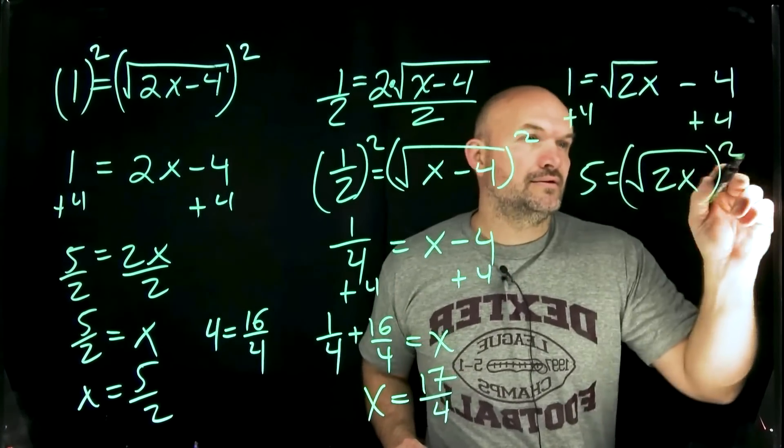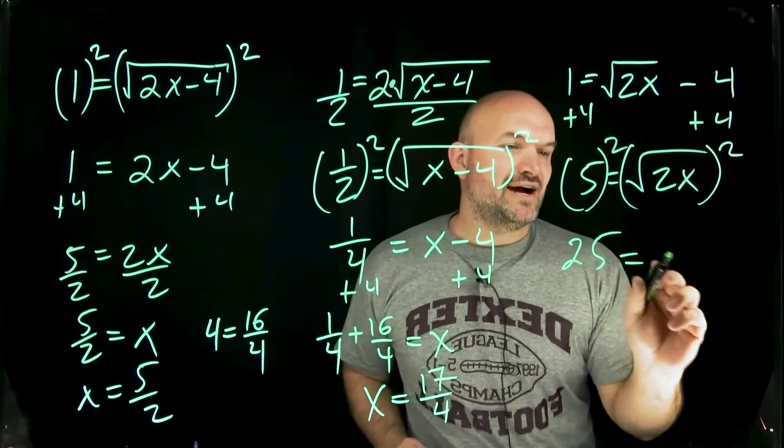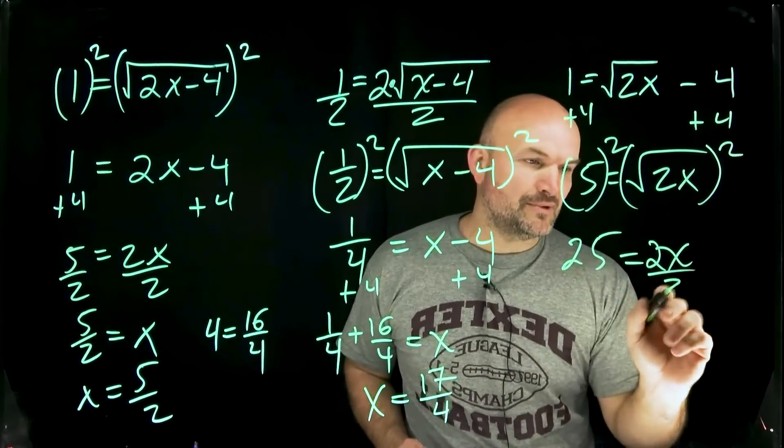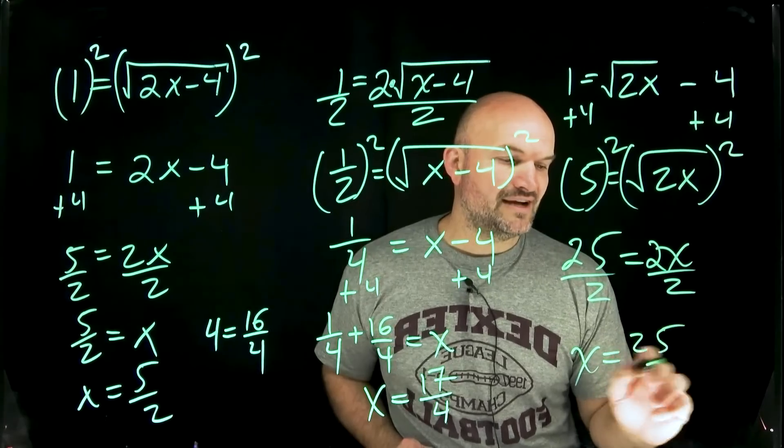Now we can isolate that or I'm sorry undo the squaring so we're going to take the square root. So 25 is equal to 2x, my apologies, and now we can use our inverse operations divide by 2. So x is going to equal 25 over 2.